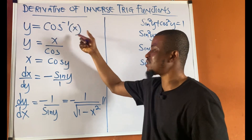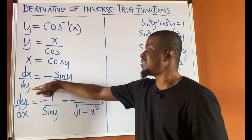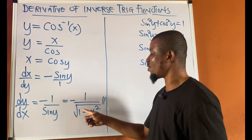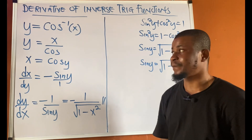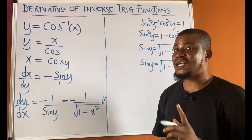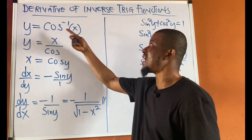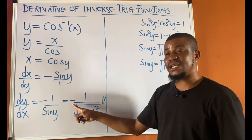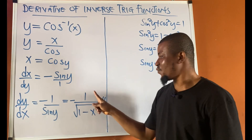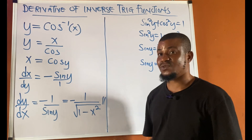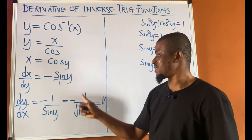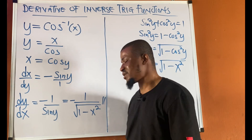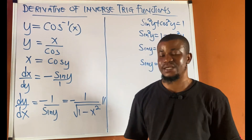So dy/dx equals negative 1 upon square root of 1 minus x squared. Remember: when y equals sine inverse of x, the derivative is positive 1 upon square root of 1 minus x squared; but when y equals cos inverse of x, it is negative 1 upon square root of 1 minus x squared.